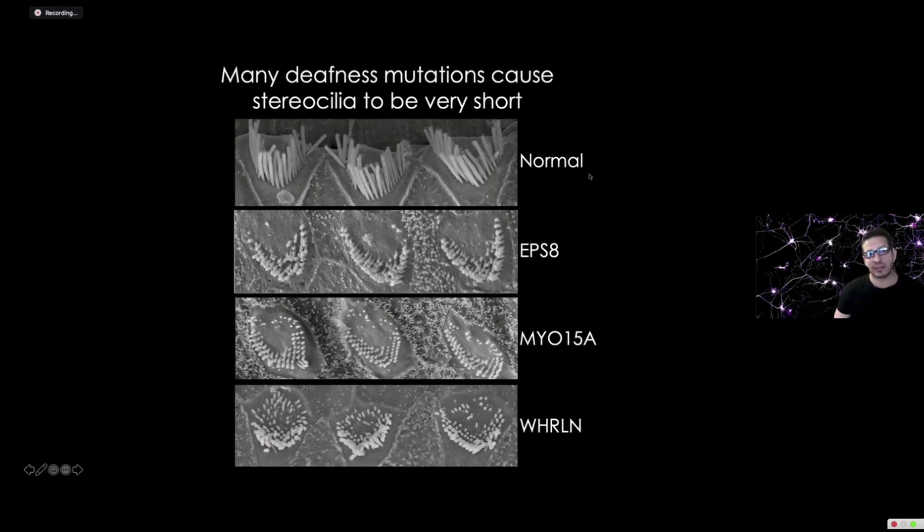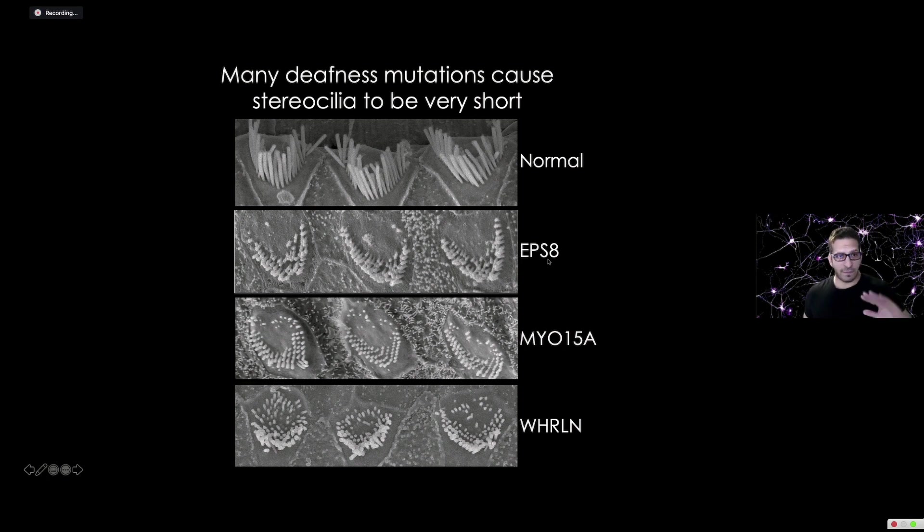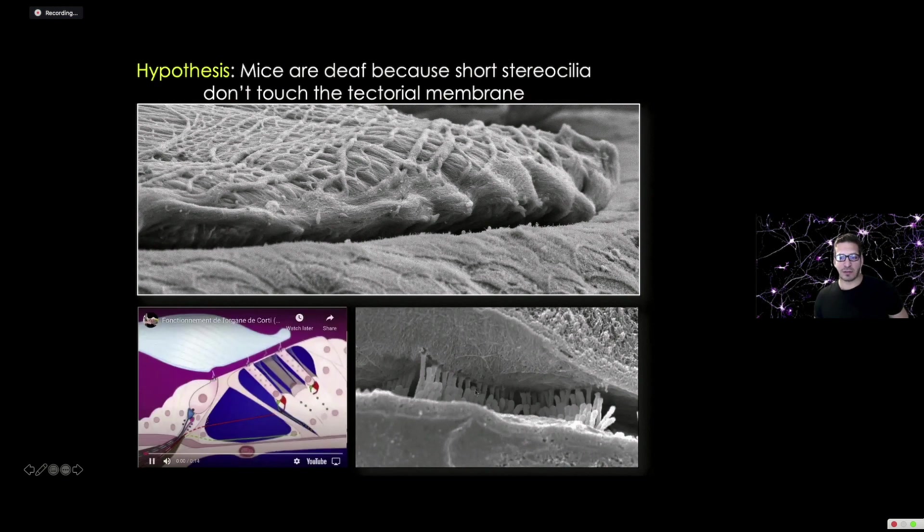We can also see what happens in certain disease states. There are three genes that, when mutated, cause hearing loss in humans and mice: EPS-8, NIO-15A, and Whirland. If you mutate any of them, we see something similar happen to the hairs. Compared to normal hairs, they're very short. All of them are very deaf as well. We could only tell with imaging why they're deaf. We put this under a microscope and look at what's going on. Now we know they're too short.